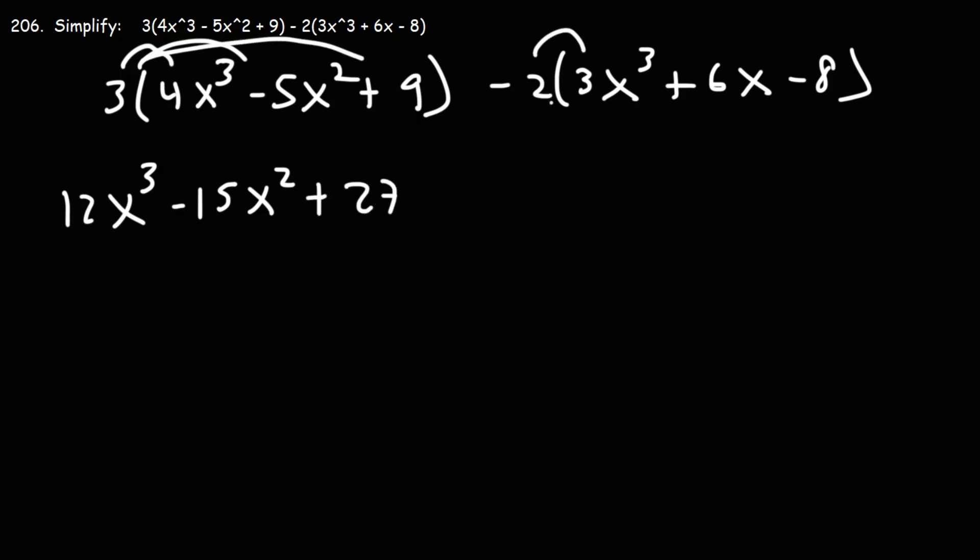Here we have negative 2 times 3x cubed, so that's negative 6x cubed. Negative 2 times 6x is negative 12x. Negative 2 times negative 8, that's positive 16.